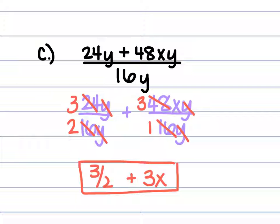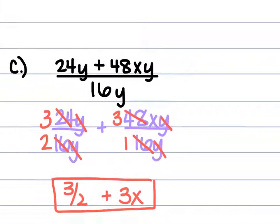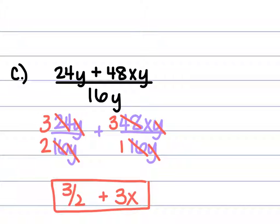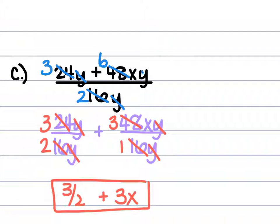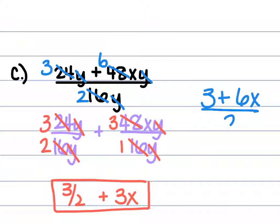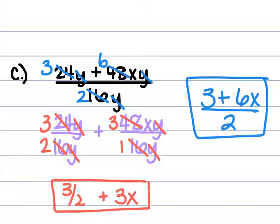You could also reduce from the beginning: 8 goes into all of those numbers evenly. The 16 becomes a 2, the 24 becomes a 3, and the 48 becomes a 6. The y cancels in all of them, giving 3 plus 6x, all over 2. Either approach is acceptable.